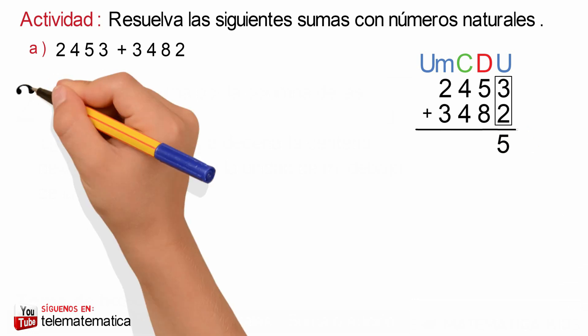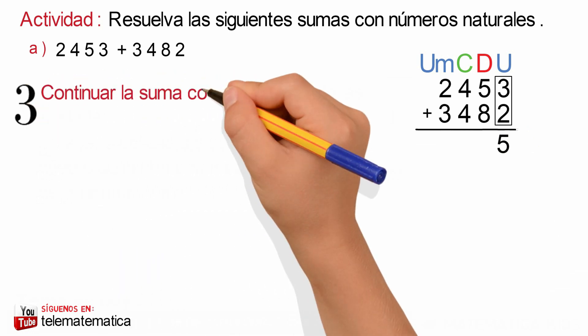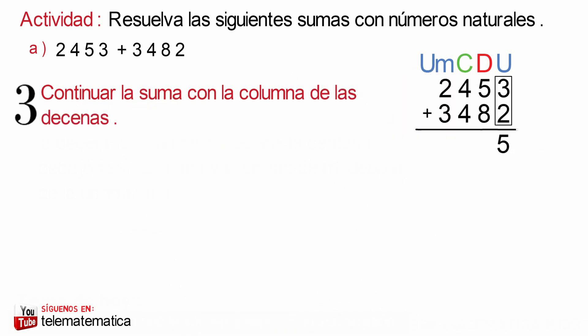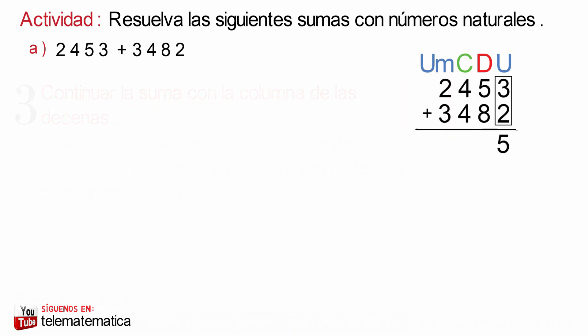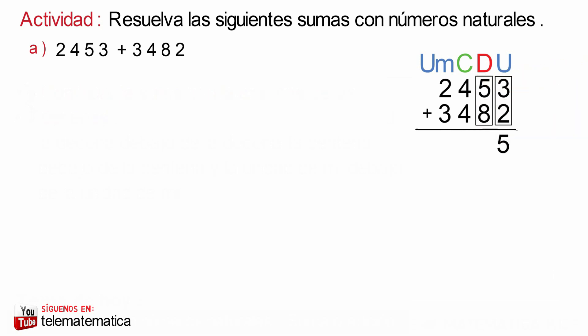Paso número 3: continuar la suma con la columna de las decenas. Sumamos: 5 más 8 es igual a 13. Escribimos el 3 y llevo 1, que lo escribimos encima de la columna de las centenas.